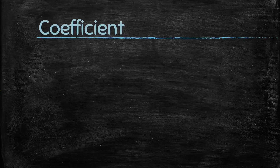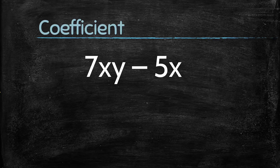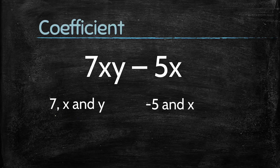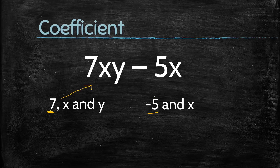Now let's understand coefficient. Consider the expression 7xy minus 5x. The terms of this expression are 7xy and minus 5x. The factors of 7xy are 7, x, and y, and the factors of minus 5x are minus 5 and x. The numerical factor of a term is called the coefficient. So here, 7 is the coefficient of the first term 7xy, and minus 5 is the coefficient of the second term minus 5x.